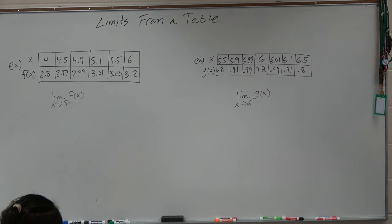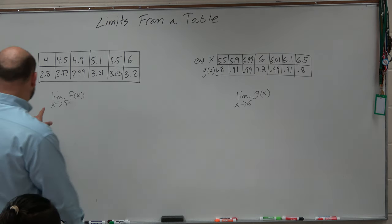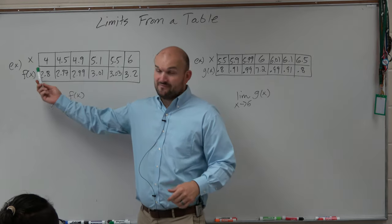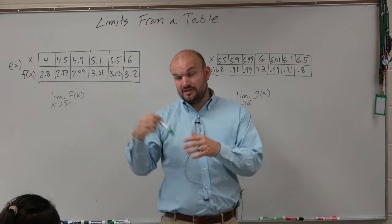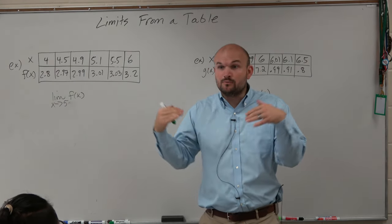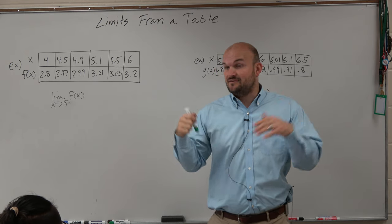We want to evaluate the limit as x is approaching 5. The top values is x, and that's what we're looking at. For the limit to exist, we want to see what is approaching from the left and from the right.